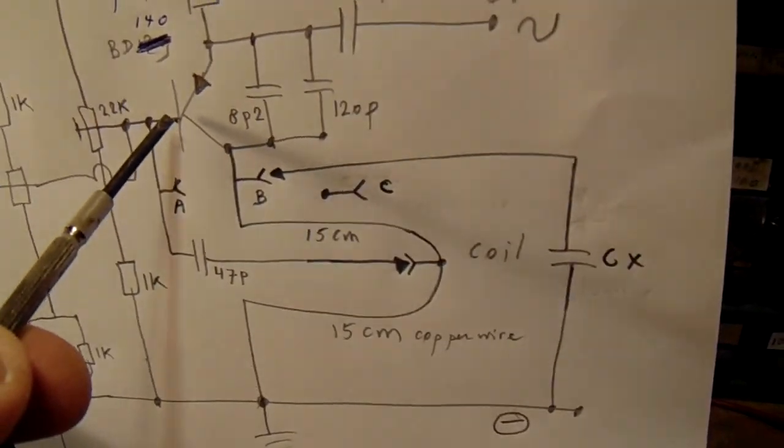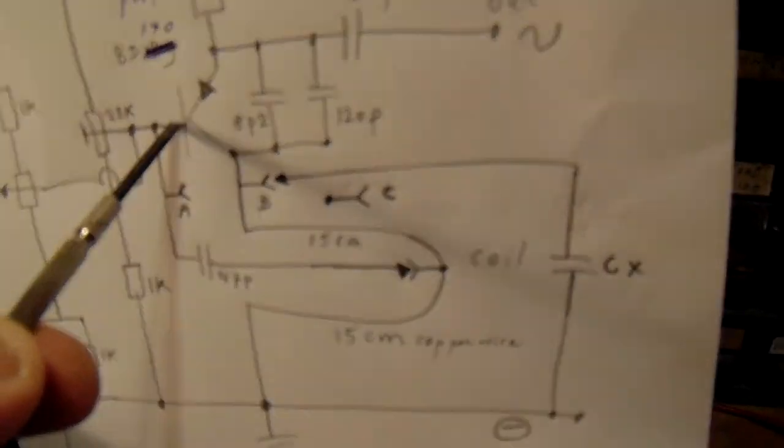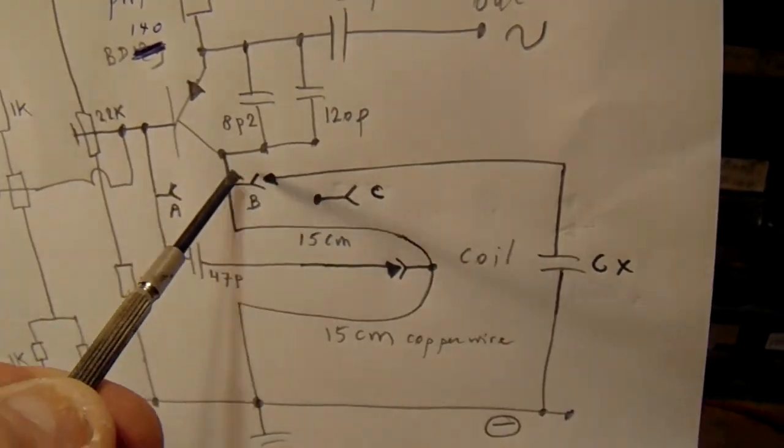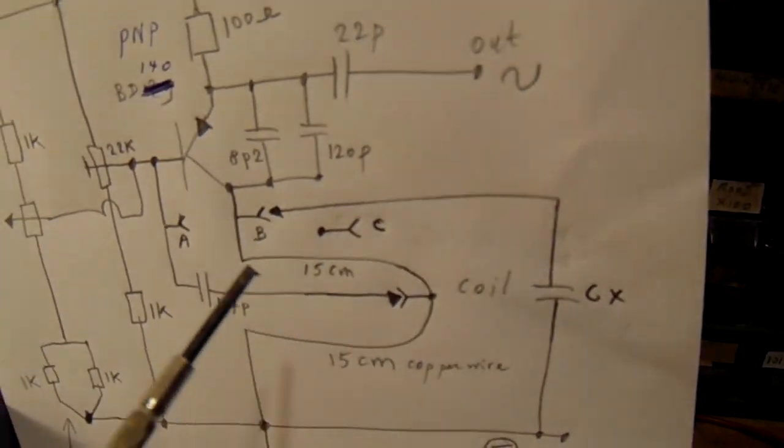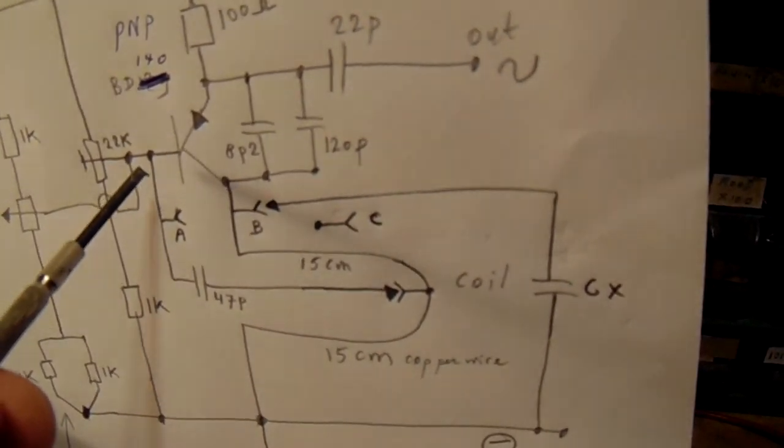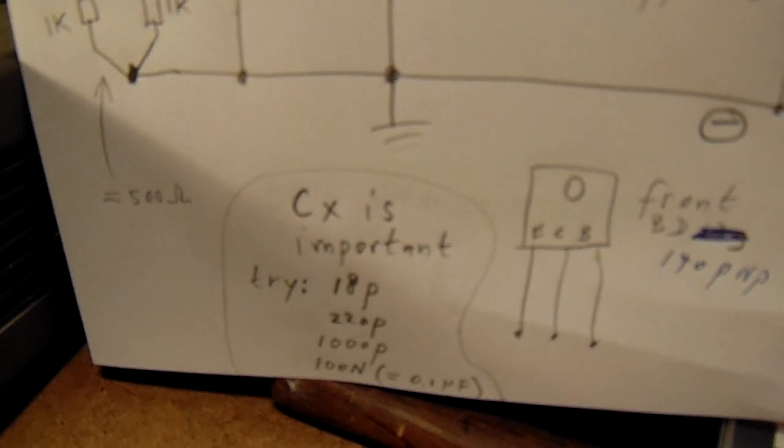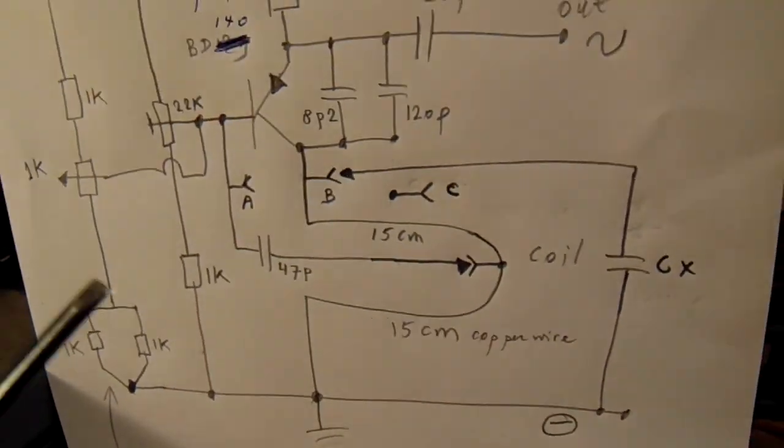So in fact, then we have a base that's grounded for AC by this capacitor. When you ground the base with these values of capacitors, you will see many very strange waveforms like I've showed it earlier.